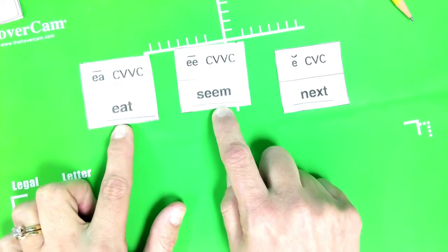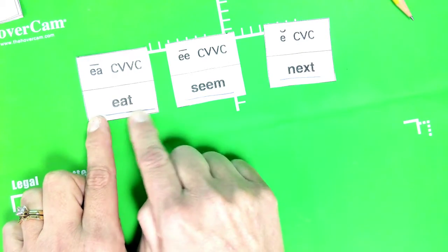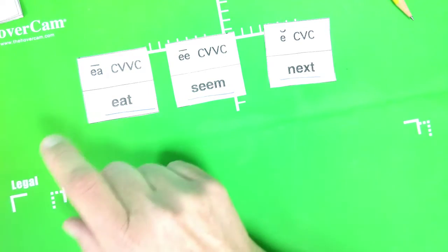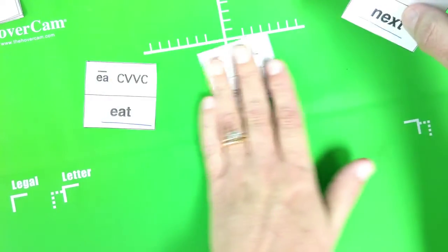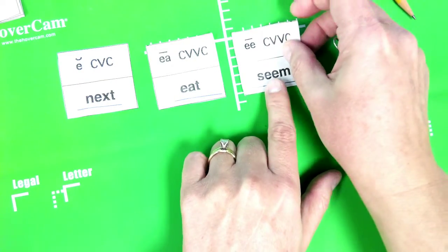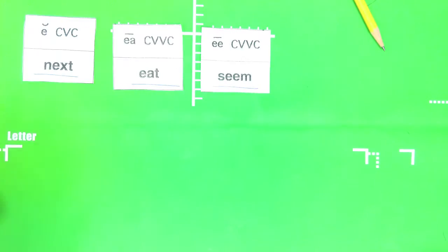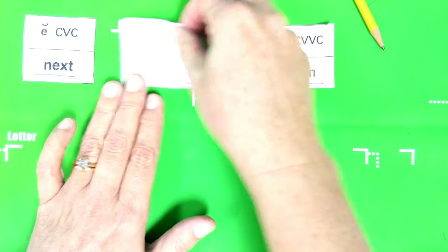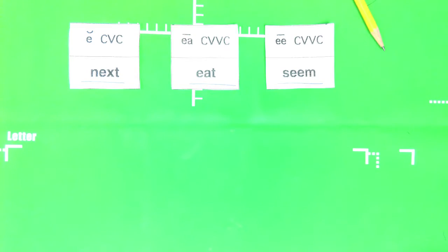These are your anchor words: eat, seem, and next. I would underline those so that you know that. Now after you get them cut out, I want it arranged like this: next first, then eat, then seem. Go ahead and stop the video and cut out your words, then make sure that you have your anchor words set up like this and turn back on the video. I'll see you in a bit.